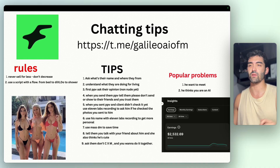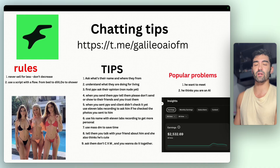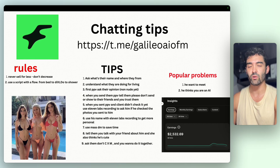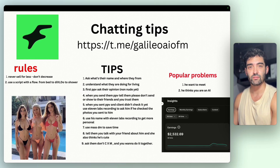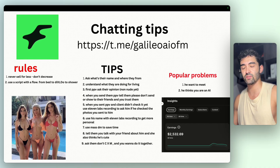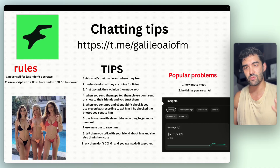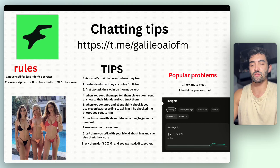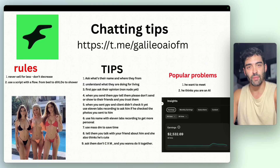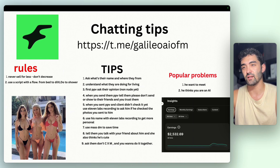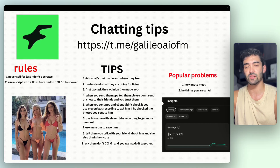Second tip: ask where they're from, and understand what they do for a living. It's important to show you're curious and interested. It also helps you understand their spending ability — a big manager probably has more money, while an 18-year-old student is less likely to spend $50 on a video.